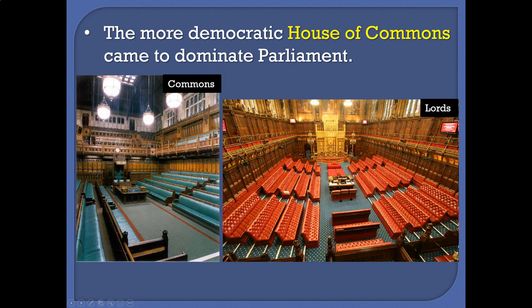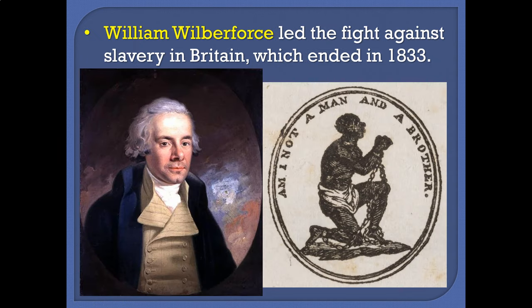Both of these houses are still in existence today, but the House of Commons is where the real power lies in Britain. Now, speaking of Parliament, one of the things they were dealing with in the 1800s was the issue of abolitionism. In our last unit on the Industrial Revolution, we mentioned a guy named William Wilberforce, who had been a tireless advocate for the end of slavery. And finally, slavery came to an end in 1833 in Britain — another good example of a reform making Britain freer and more democratic.